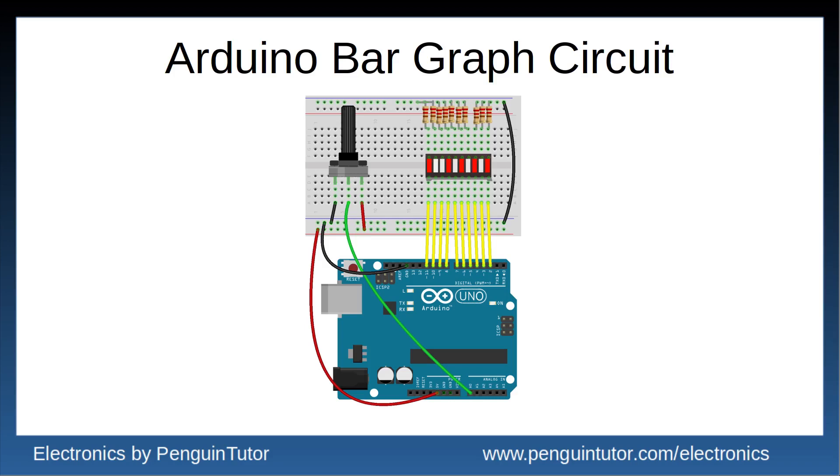The output is through the digital output pins, which connect to a bar graph LED display. Current limiting resistors are used to protect the LEDs at the Arduino.